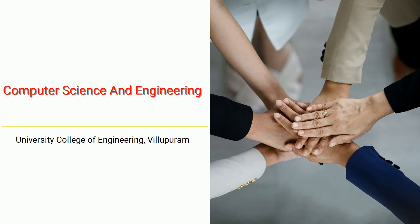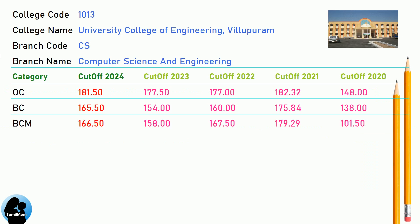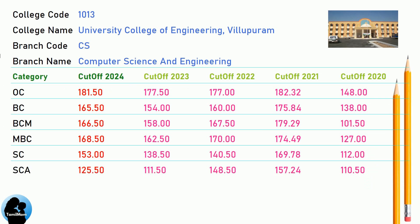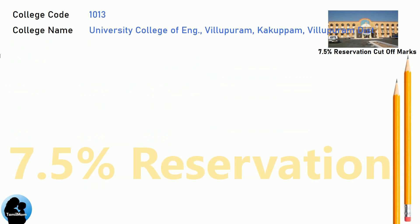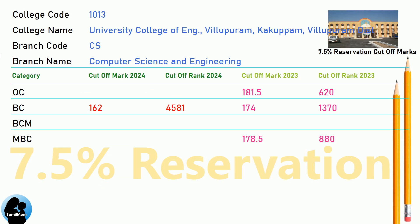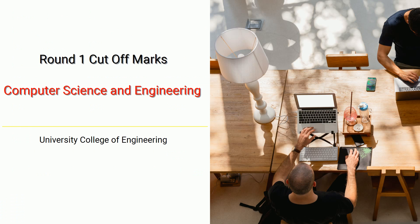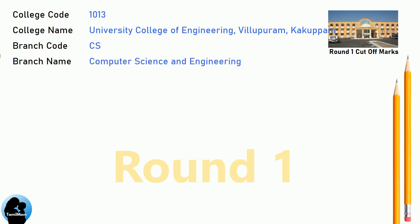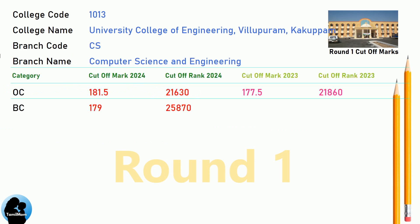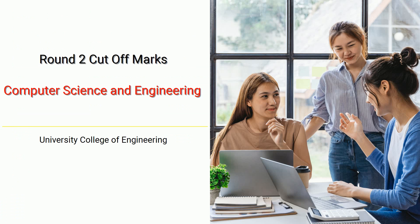DNA Cut-off for University College of Engineering, Villapuram in Computer Science and Engineering. DNA 7.5 Reservation Cut-off for University College of Engineering, Villapuram in Computer Science and Engineering. DNA Round 1 Cut-off for University College of Engineering, Villapuram in Computer Science and Engineering. DNA Round 2 Cut-off for University College of Engineering.